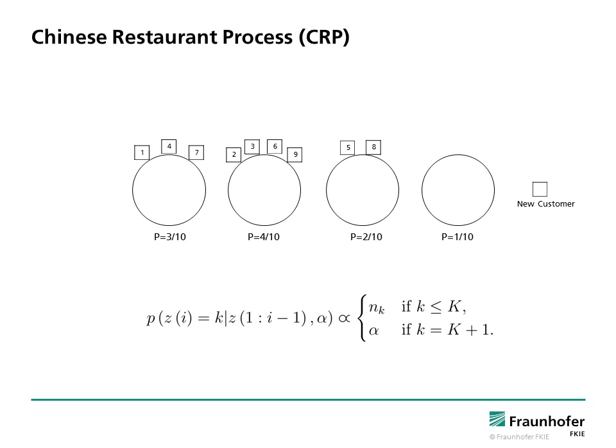They sit at an unoccupied table with a probability proportional to a scaling parameter alpha. After all customers have entered the restaurant, the seating plan provides a clustering.